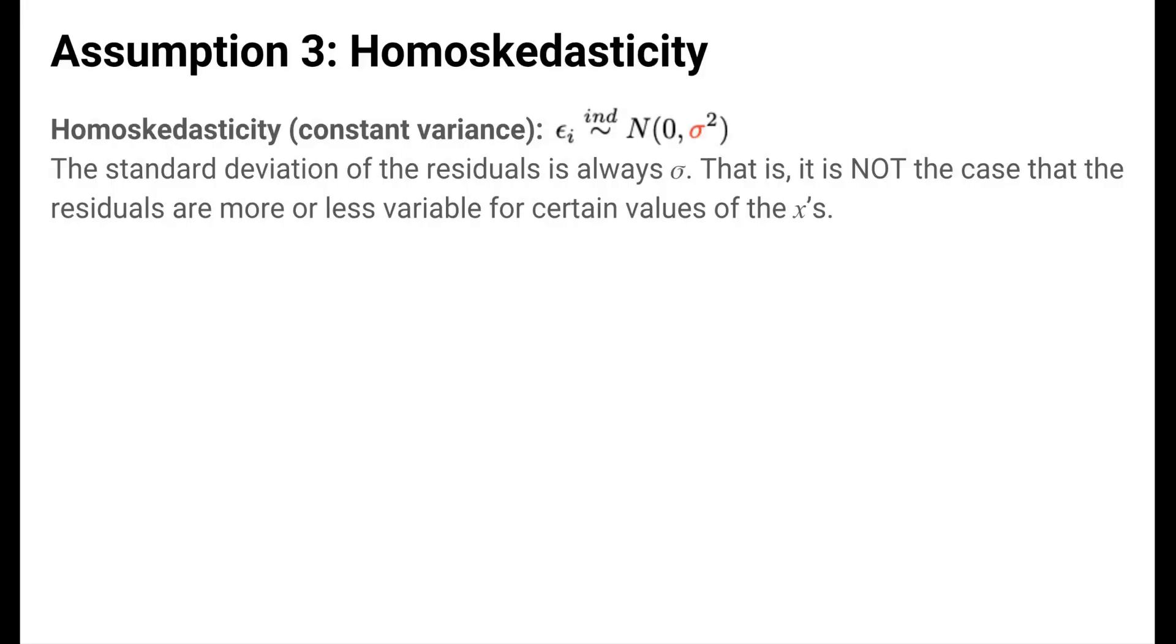The third part of the assumption is homoscedasticity, which is a long word that means constant variance. This part says that the standard deviation of the residuals is always the constant value sigma. In other words, it is not the case that the standard deviation of the residuals is one for certain cases and three for others. The variability in the residuals must always be the same.